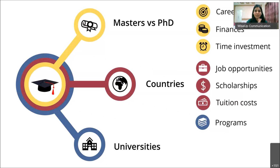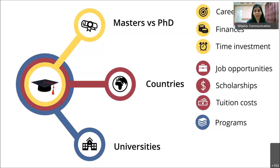Nowadays a lot of nine-month master's degrees are appearing in the US, charging nearly the same fees as longer programs. My suggestion is not to go for those. In nine months you can barely learn anything, and when you go abroad it takes about three to four months just to adjust. By the time you settle in, your degree is almost over.